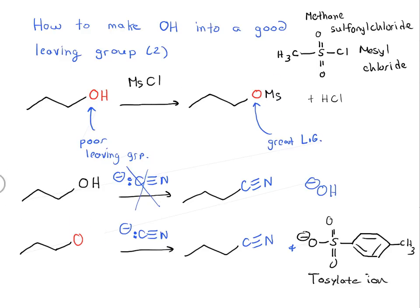And similarly, if you take the mesylate and treat it with CN, this also works. And for our purposes, mesyl and tosyl are essentially interchangeable. There is really no significant difference in their reactivity. But like I said, you may see either of these two groups in your travels in organic chemistry. And this is the purpose of the tosyl and mesyl groups.